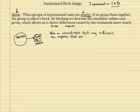That are not included as a factor already. So we want to block on characteristics that may influence the response that are not included as a factor.